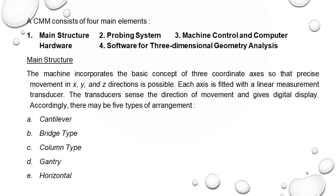The machine incorporates three basic coordinate axes so that precise movement in X, Y and Z directions is possible. Each axis is fitted with a linear measurement transducer that locates X, Y and Z coordinates — the transducer sends the direction of movement and gives a digital display accordingly. There are five types of CMM arrangements: cantilever type, bridge type, column type, gantry type, and horizontal type.